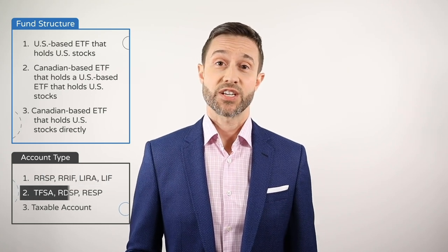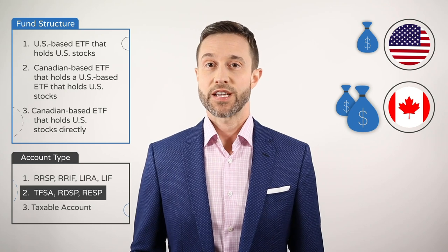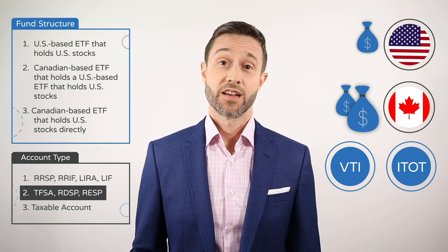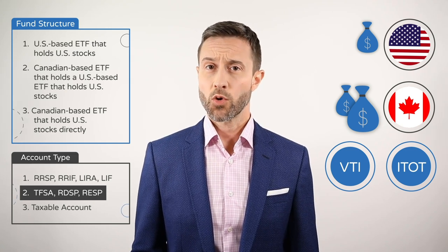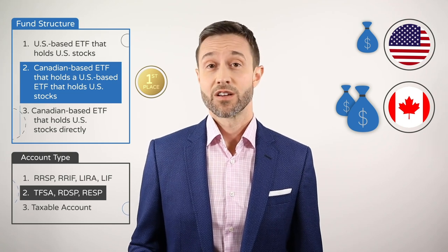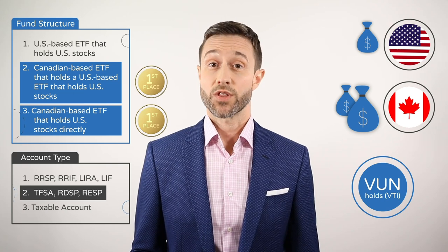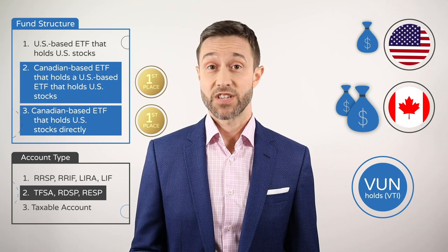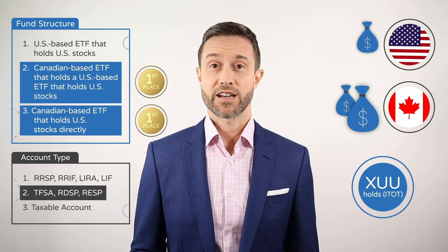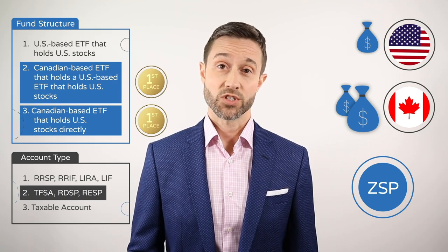If you're holding US equity ETFs in a TFSA, RDSP, or RESP, there's nothing you can do about the withholding tax drag. US-based ETFs like VTI and ITOT receive no preferential tax treatment in these account types, so they're effectively the same as the other two ETF structures and will be subject to a foreign withholding tax drag of around 0.3% per year. For this reason, I'd recommend holding either a Canadian-based ETF like VUN or XUU, which wrap a US-based ETF, or a Canadian-based ETF like ZSP that holds US stocks directly.